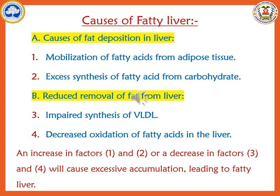The second major cause is reduced removal of fat from the liver. This may be due to two main reasons: first, impaired synthesis of VLDL — very low density lipoprotein — which is involved in the migration of fat from the liver to other tissues. When VLDL synthesis is impaired, there is reduced migration of fat from the liver to adipose tissue, and fat accumulates in the liver. Second, decreased oxidation of fatty acids in the liver — the liver is a major site for beta-oxidation, and when this does not occur regularly, fatty acid accumulates, leading to fatty liver.